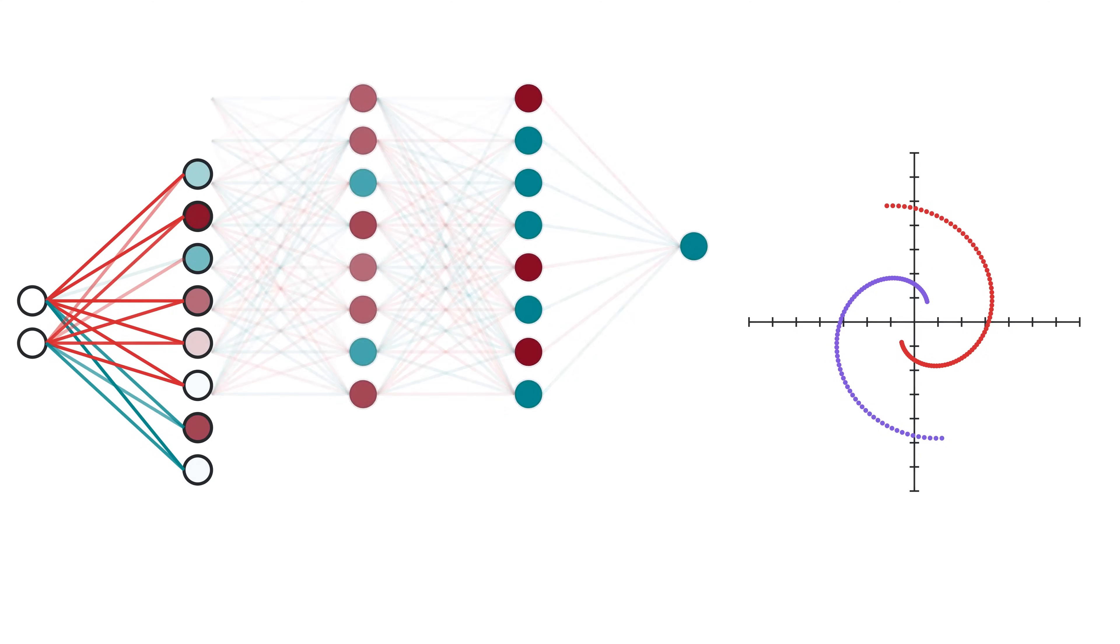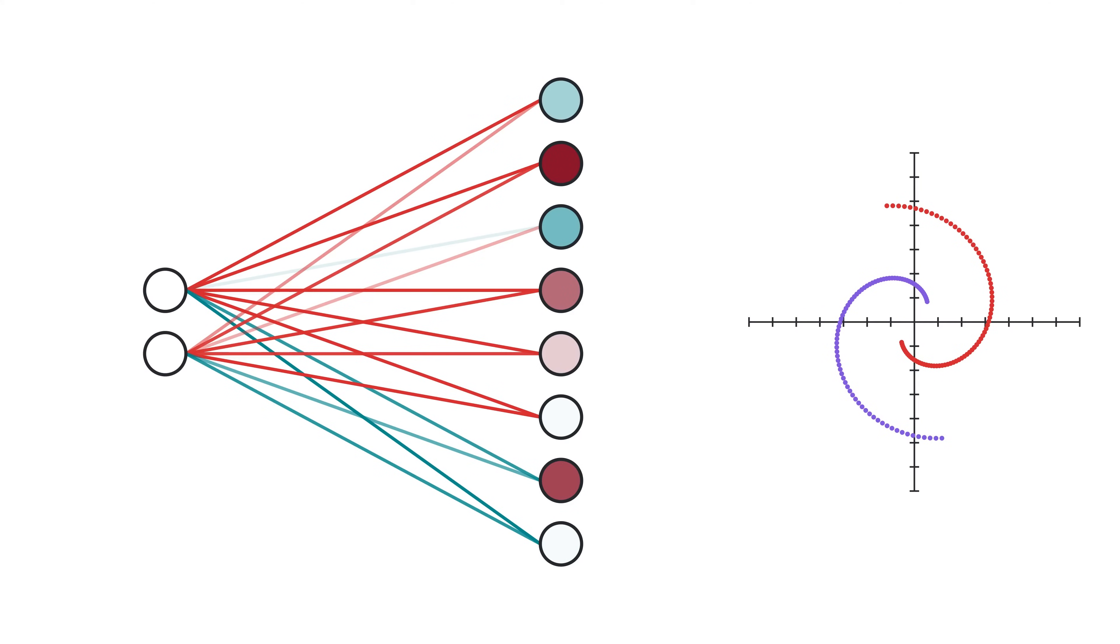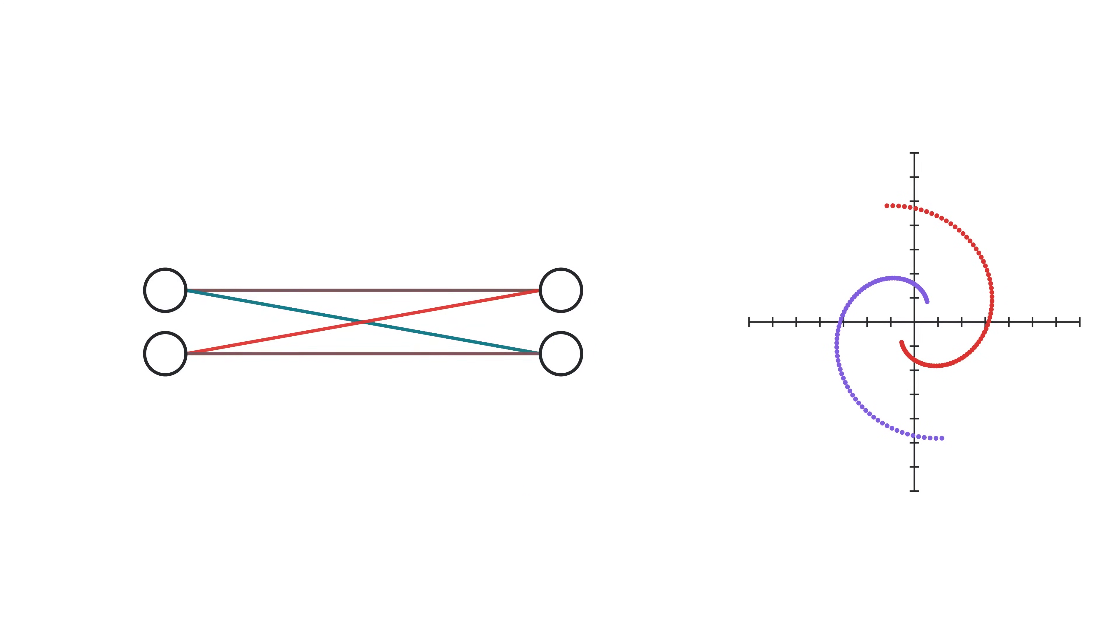Let's make our neural network one layer for now. Here our input of two dimensions, the x and y coordinates, is being mapped to a vector of eight dimensions, since it has eight neurons, but it's very hard to visualize eight dimensions. So let's bring down our number of neurons in the layer to only two.